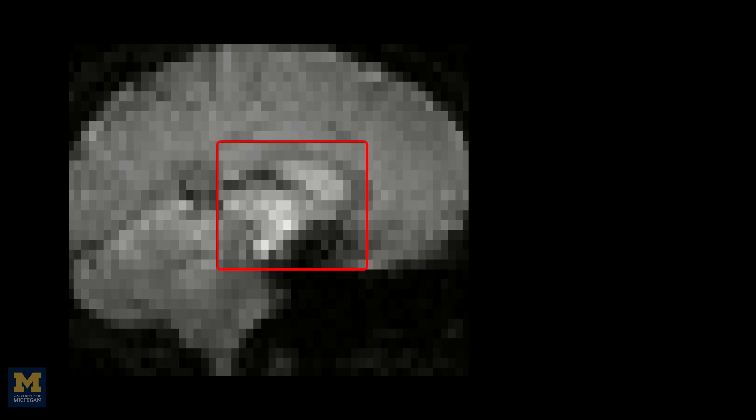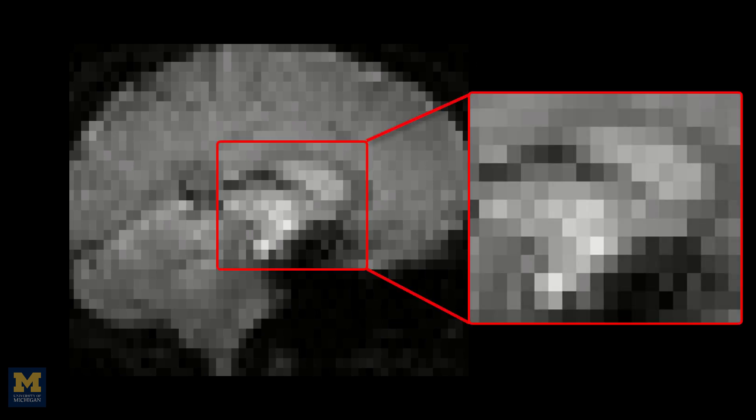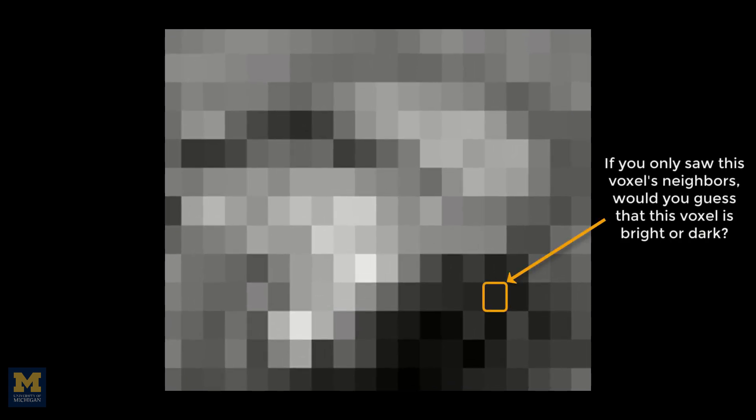But are the voxels completely independent? Let's take a look at a typical fMRI image. If we zoom in, notice that a given voxel is similar to its neighbors. Bright voxels tend to be surrounded by brighter voxels, and darker voxels tend to be surrounded by darker voxels. Since we can make a reasonably accurate guess about the signal intensity for a given voxel given its neighbors, the voxels are not completely independent.